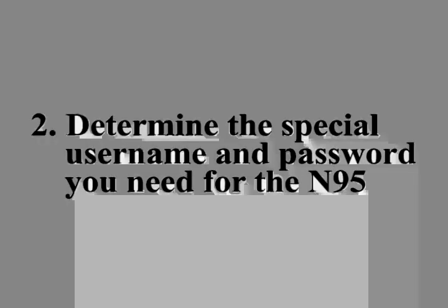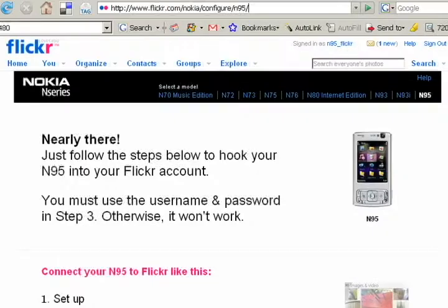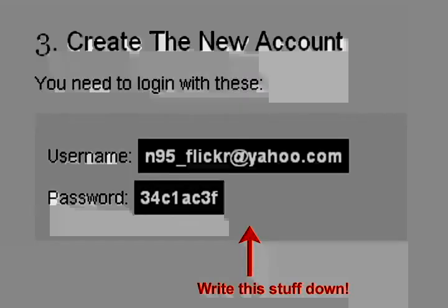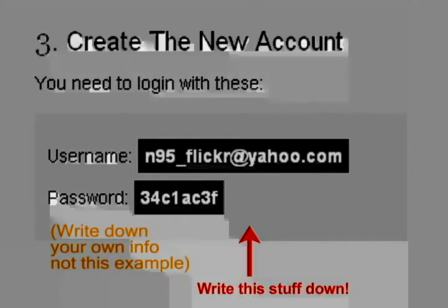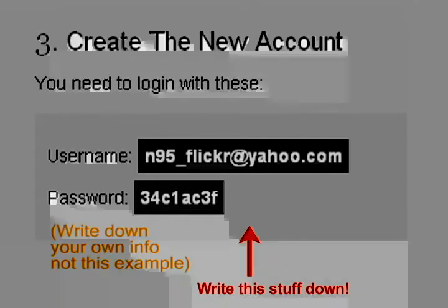Step number two: determine the special username and password you need for the N95. Go to this address — it's very, very important. When you go to this address, you will see this webpage with instructions for setting up your N95 to work with Flickr, many of which we're covering in this video. The most important step is step number three, which gives you the username and password values you need to enter into the device. Note that this is not your Yahoo username and password — these are different values, so you should write them down, because otherwise you will never remember them.